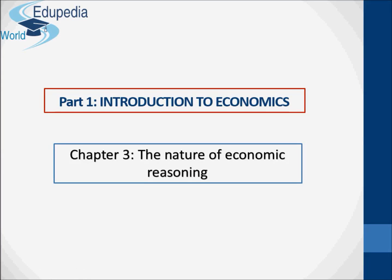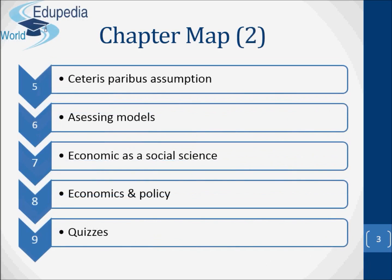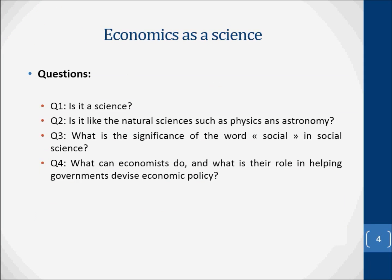Hello everyone and thanks for watching Edupedia World videos. The present chapter is entitled The Nature of Economic Reasoning. In this chapter, we are going to see these points: 1. Economics as a science, 2. The models in economics, 3. How to build models, 4. Using models. Then we are going to discover the ceteris paribus assumption, assessing models, economics as a social science, and economics and policy. By the end, we will try to answer some quizzes. So let's get started.